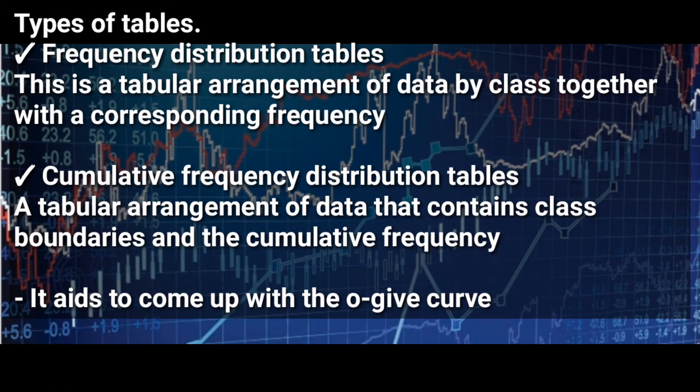Now let's look at the types of tables. We have mainly two types of tables: frequency distribution tables and cumulative frequency distribution tables. Frequency distribution tables are a tabular arrangement of data by class together with corresponding frequency.